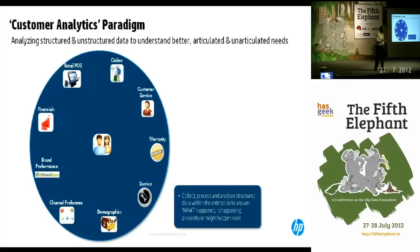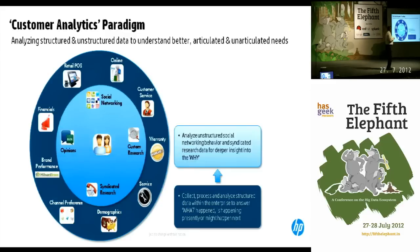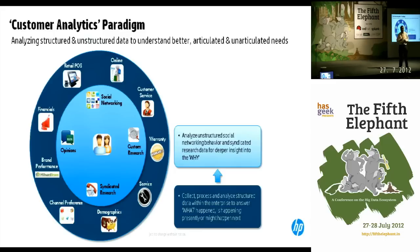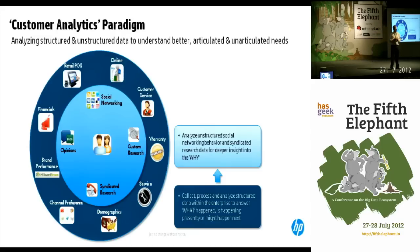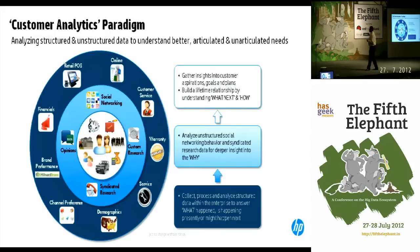When we integrate all this information together to create a single view, we really understand what a customer is doing today. The next layer is external information — what customers are saying in social blogs and social media, and reports from syndicated information providers to understand the market better. Once we augment this external data with our internal transaction, customer transaction, and demographic information, we have the ability to answer questions like why is a customer doing what they're doing, and ultimately predict what a customer will do next.